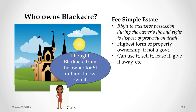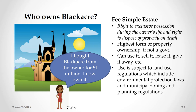A fee simple estate allows you to use the property in almost any way you want — you can sell it, lease it, give it away, or modify it. However, how you use and modify it is subject to various land use regulations, which include environmental protection laws. For example, if there is a stream or river that runs through your property, environmental laws will prevent you from dumping toxic waste into it. Other land use regulations are found in municipal zoning and planning regulations, which deal with whether you can run a business from a property, or how big or tall a house you can build.